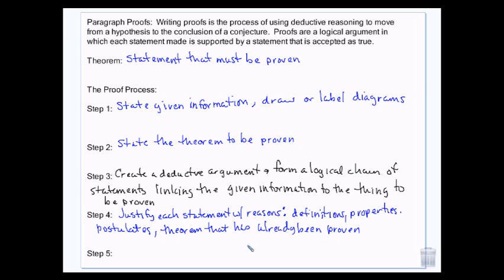You have to justify each statement — I can't just make random statements. I have to justify them with reasons, definitions, properties, postulates or axioms, and any theorem that has already been proven. You can't use unproven theorems to prove something else. For example, if my theory is I'm an alien and my other theory is that aliens have two-inch pinky fingers, I would have had to prove that aliens have two-inch pinky fingers before I could use it to prove I'm an alien. You can't go spouting random unproven theories to prove what you're trying to prove. And then finally, you state what you have proven.